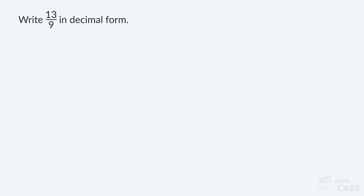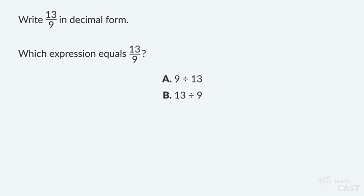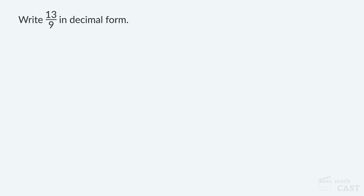Let's check out an example. Suppose we're asked to write 13 ninths in decimal form. To start, we need to rewrite the fraction using division. Which expression equals 13 ninths — A: nine divided by 13, or B: 13 divided by 9? The answer is B: 13 divided by 9. To write a fraction in decimal form, we divide the numerator by the denominator.